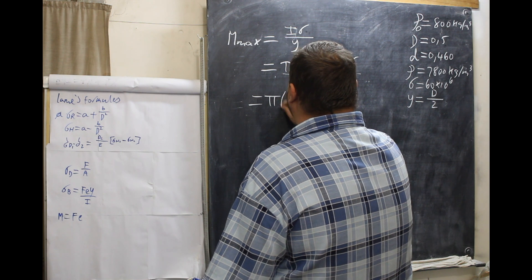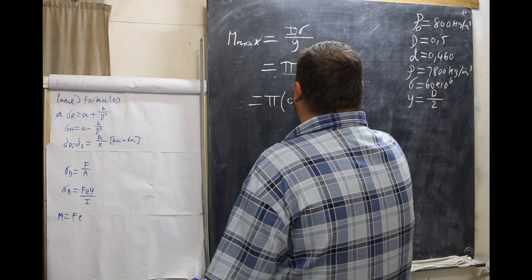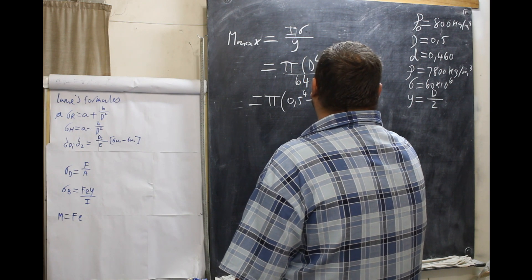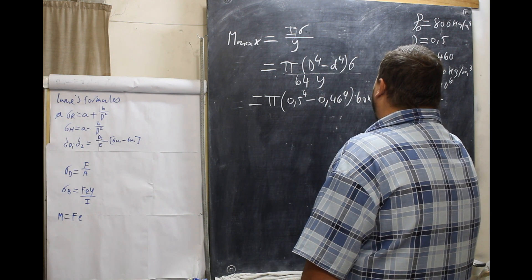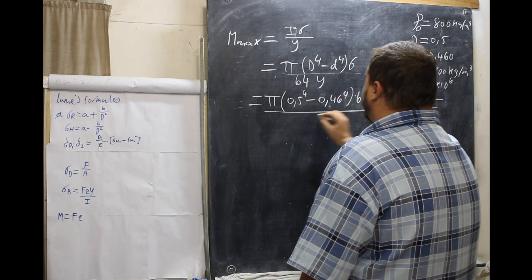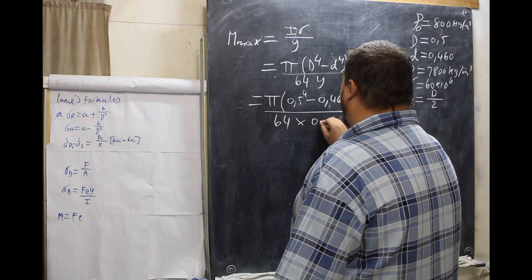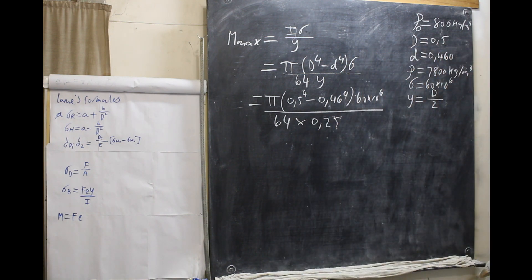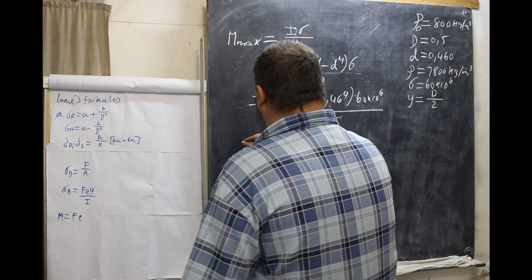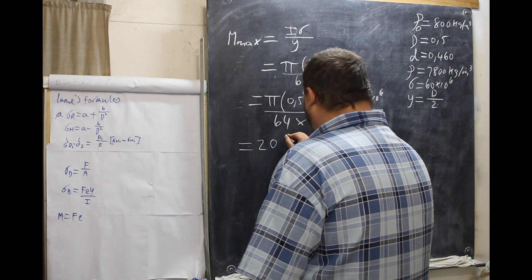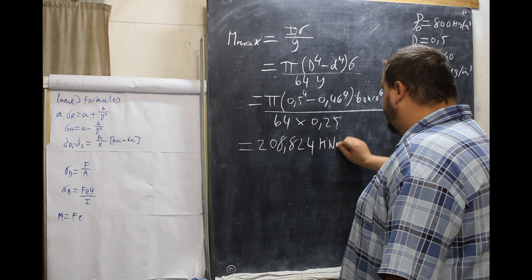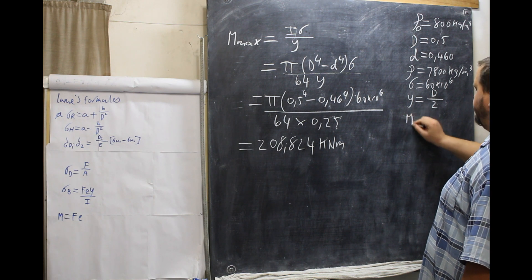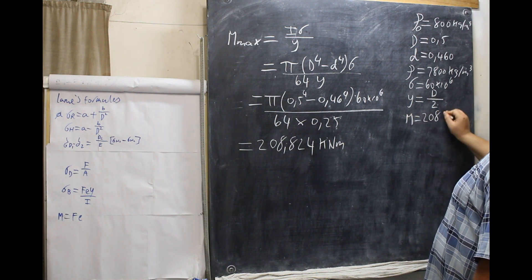Pi times 0.5 to the power of 4 minus 0.46 to the power of 4, times 60 times 10 to the power of 6, all over 64 times 0.25. That is half our diameter. And what we come out with is 208,824. So M, for reference, is 208,824.